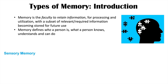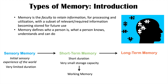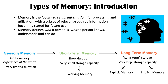In this lesson, we're going to cover the following types of memory. The first is sensory memory, which is an initial sensory experience of the world with a very limited duration. Then we'll move on to short-term memory, which has a short duration and a very small storage capacity, including working memory. Finally, we'll look at long-term memory, which has long-term storage and a very large capacity, and splits into explicit memory and implicit memory.